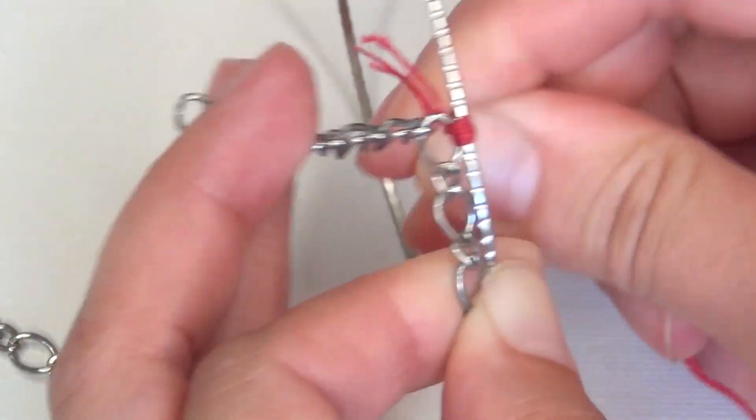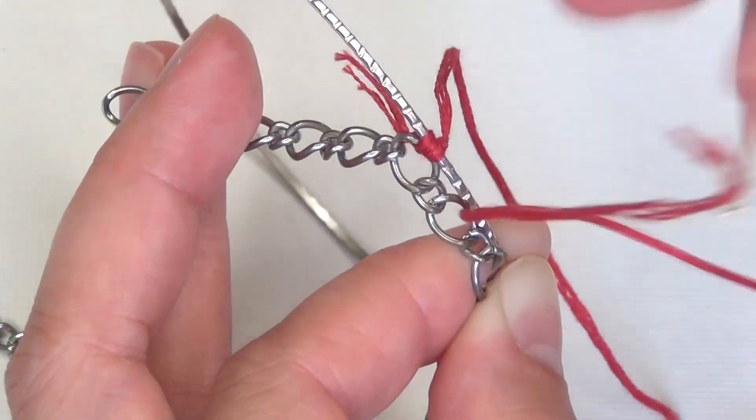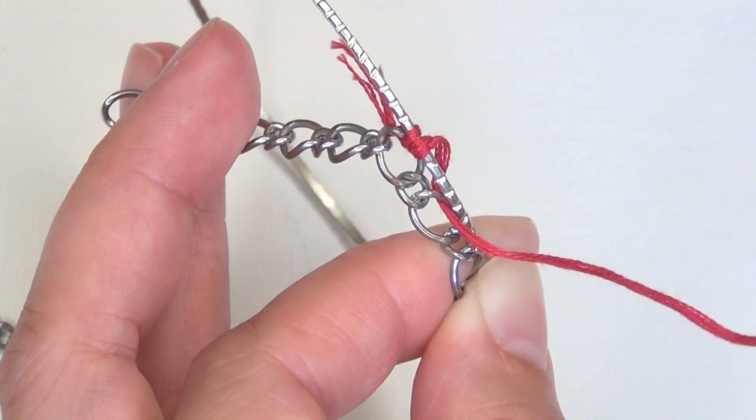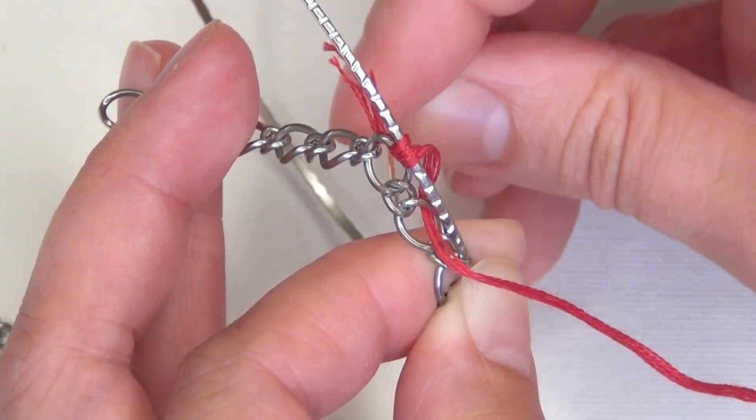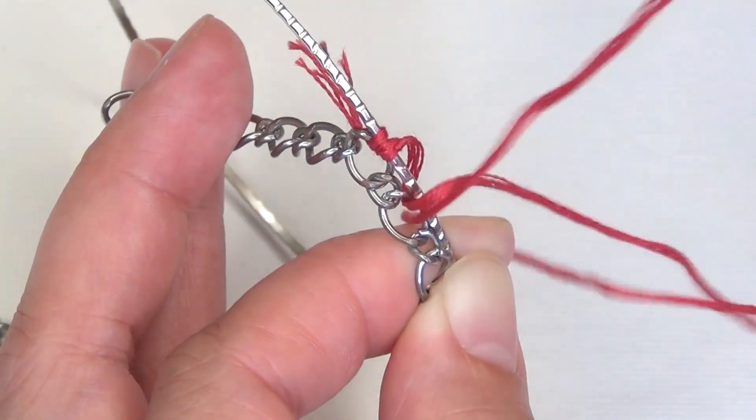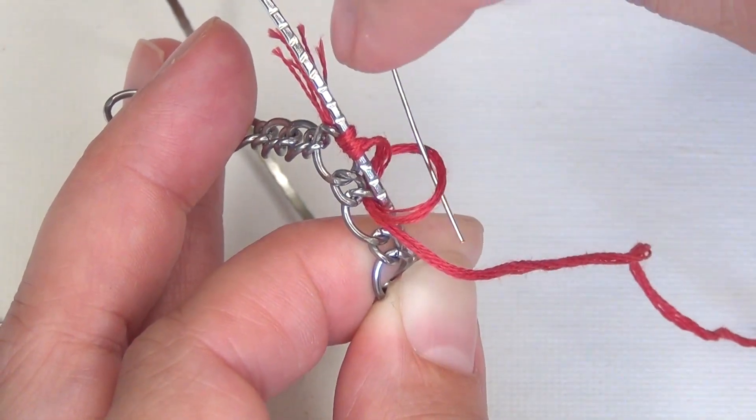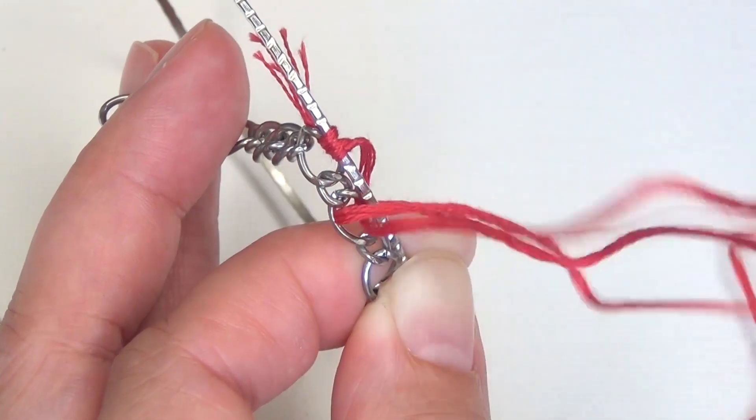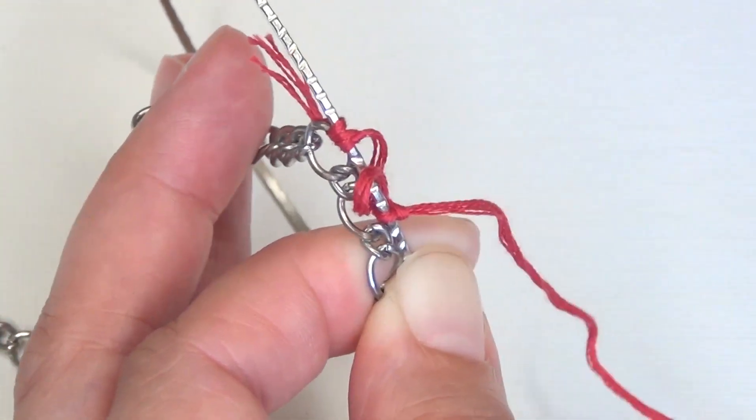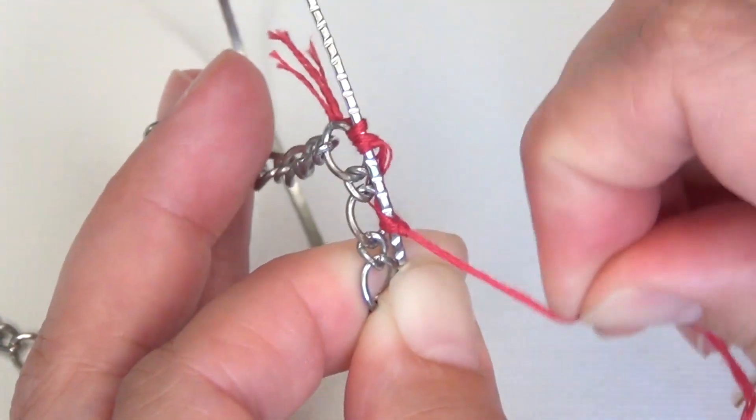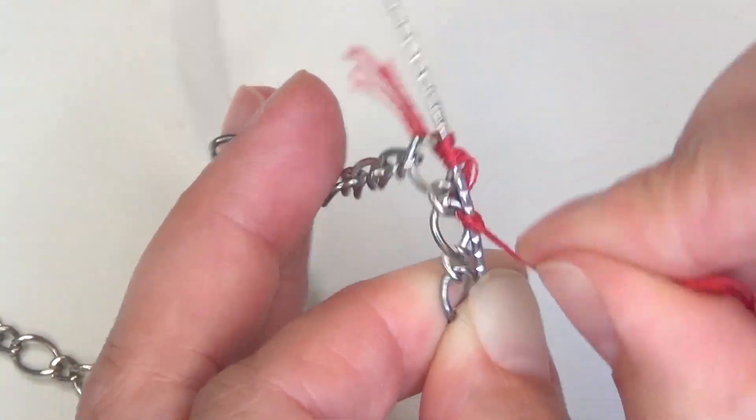You're going to repeat this pattern all the way around your bracelet. So just move down to the next large link, going through the back of the link, pull your thread through, then around the bangle and then through the back of the link again. Before you pull it tight, take the end of your embroidery thread down through the loop and then pull it tight to close up the loop. It's really just as simple as that.